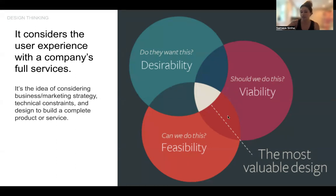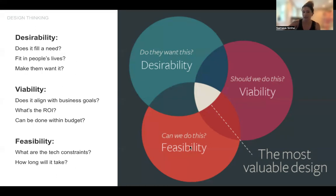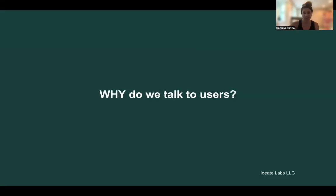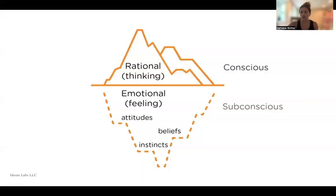Another way to describe design thinking: the most valuable designs are found at the intersection of desirability, viability, and feasibility. When thinking about desirability, we ask: does it fill a need, does it fit into people's lives, can we make them want it? For viability, we ask: does it align with business goals, what's the return on investment, can it be done within a budget? For feasibility, we ask: how long will it take to build this product or idea?